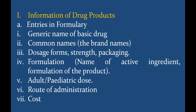The first section is information on the drug product. Entries in the formulary include: first, the generic name of the drug and the common name, that is the brand name; then the dosage form, strength, and packaging; then the formulation, that is the name of the active ingredient and the formulation of the product; whether it is the adult dose or the pediatric dose; the route of administration; and the cost of the medication.